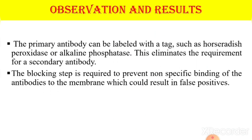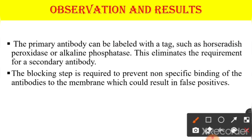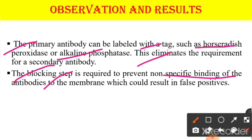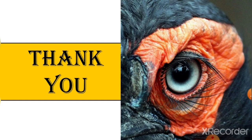The secondary antibody can be labeled with a tag such as horseradish peroxidase or alkaline phosphatase, eliminating the requirement for a separate secondary antibody. The blocking step is required to prevent non-specific binding, which could result in false positives. The color change observed is due to the enzyme — horseradish peroxidase or alkaline phosphatase — allowing you to identify a known biological protein from the biological sample.